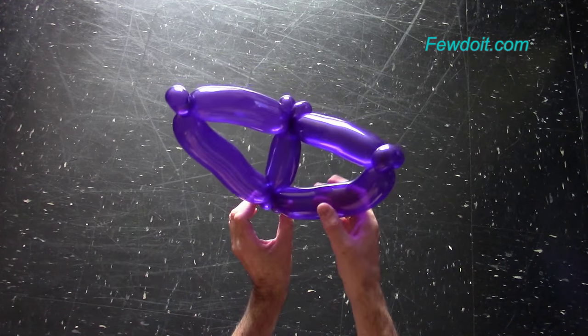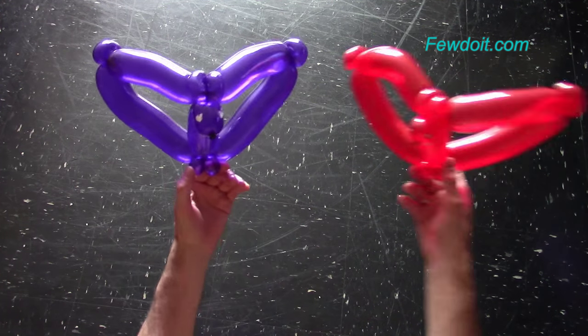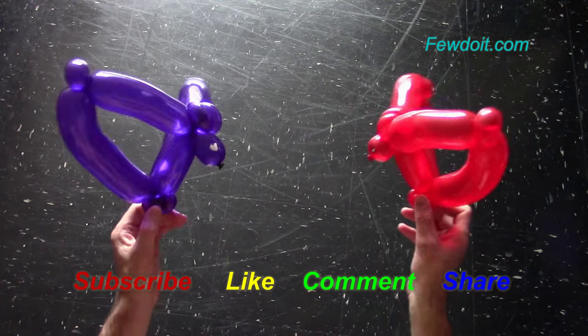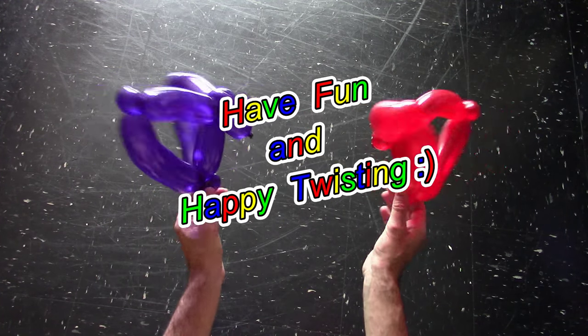And here is another example where I use red balloon to make vampire bats. Subscribe to my video channel to stay updated. Like the video. Share it with your friends. Leave comments. Have fun and happy twisting.